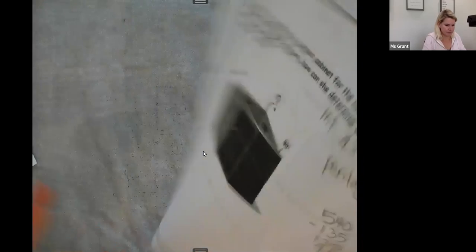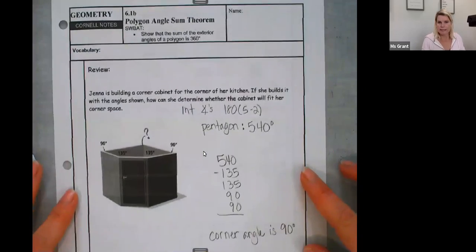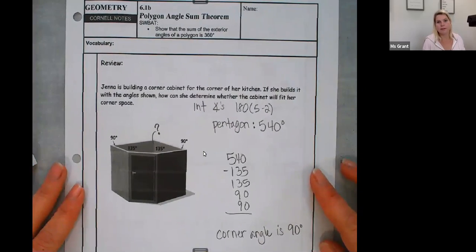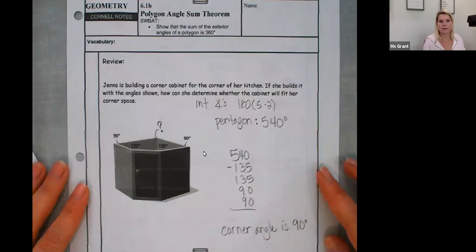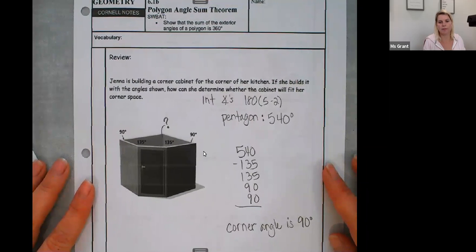Okay, real quick. We're on 6.1 B, angle sum. We're talking about exterior angles. So this is number one, a problem from yesterday. Just pause it and copy down these numbers if you need to look at it, because I'm going to turn the page.